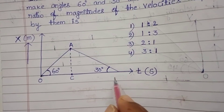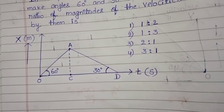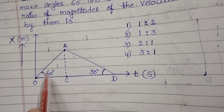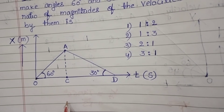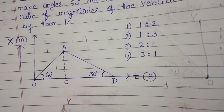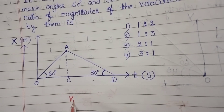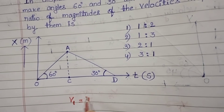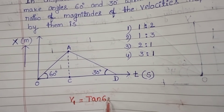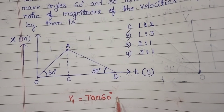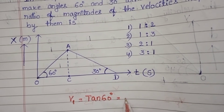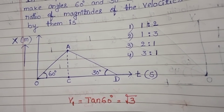Taking point D, the slope of the first straight line gives velocity. So let V1 = tan 60 degrees. The value of tan 60 degrees is root 3.